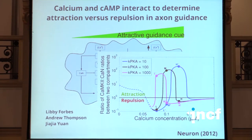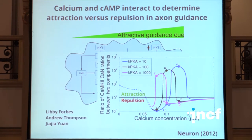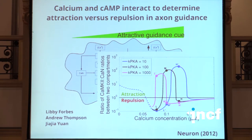The results of the model show the ratio of outputs from the two sides: if this ratio is above one, we hypothesize that leads to attraction; below one, repulsion. The three curves show different cyclic AMP levels. Black corresponds to normal cyclic AMP levels — there's a critical range of calcium for which you get attraction, but for low or high calcium you get repulsion. The blue curve shows the effect of reducing cyclic AMP levels, which shifts this curve to the right on the calcium axis.